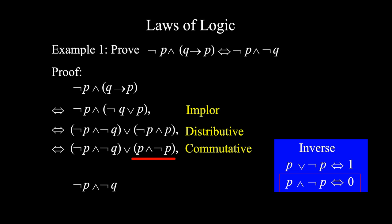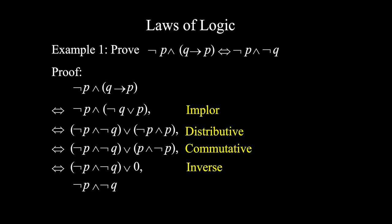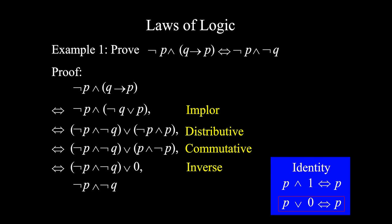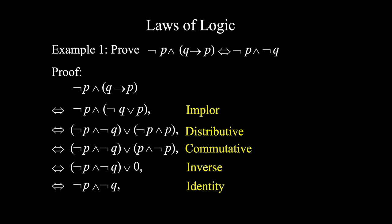Hence, (¬p ∧ ¬q) ∨ (p ∧ ¬p) is equivalent to (¬p ∧ ¬q) ∨ 0, with argument inverse law. And finally, to get rid of ∨ 0, we apply the identity law. So (¬p ∧ ¬q) ∨ 0 is equivalent to ¬p ∧ ¬q. So now we're done.